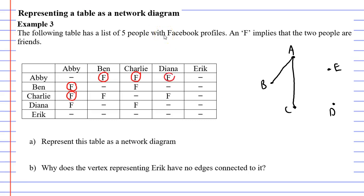Alright, next one is Diana and Abby are friends in two different spots. We can see that. So A needs to connect with D.